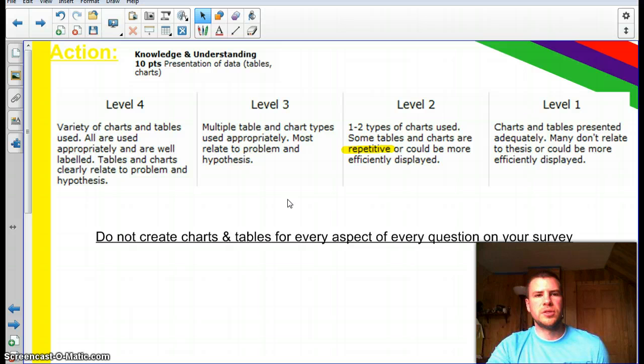Now moving on to the second component of the rubric. We have the 10 marks for knowledge and understanding, which is just how you present the tables and charts from your survey. So I just want to point out that repetition, you want to try to avoid creating a table or a chart for every single column, every single question, and so on that you've asked in your survey. So try not to be repetitive. Instead, you want to of course use a variety of charts and tables to achieve a level 4. But they need to clearly relate to the problem and the hypothesis. So if you had some questions on your survey, and this happens, that don't necessarily directly relate or are not going to be used for the analysis, then you don't need to include them in a summary of your data.